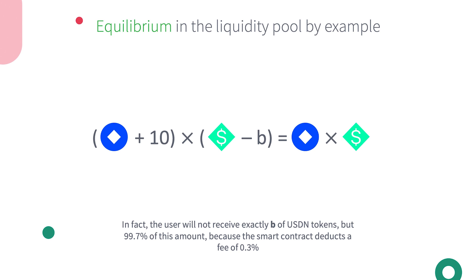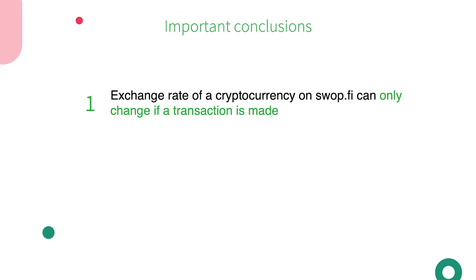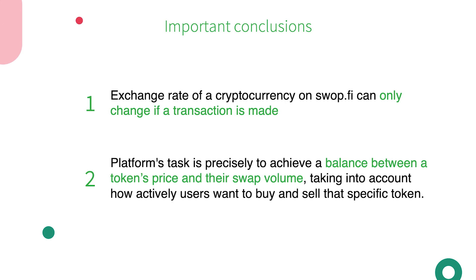From this, we can draw two important conclusions. First, the exchange rate of a cryptocurrency on Swap.fi can only change if a transaction is made. Second, the platform's task is precisely to achieve a balance between a token's price and their swap value, taking into account how actively users want to buy and sell that specific token.